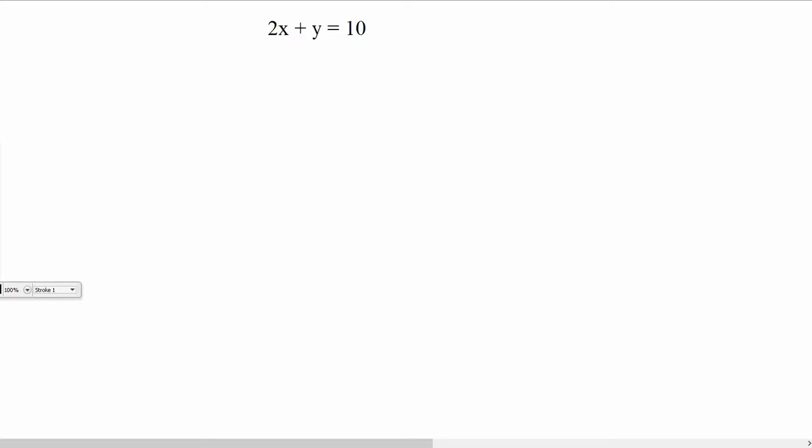So the last example that I have of finding slope is finding slope when you're given an equation. So when we're given an equation, the best way, in my opinion, in order to find slope is to use the slope intercept form, which is y is equal to mx plus b.